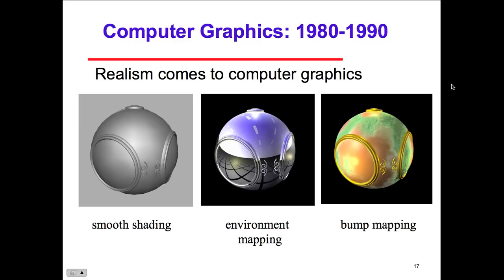Computer graphics from the 1980s to the 1990s: realism comes to the computer graphics world. Here we have smooth shading — this is the realism that comes in terms of the algorithms. And it's interesting — you can see the shading, and it's smooth because you don't see the boxes and the lines. There's an algorithm doing that for you. This class is going to give you the vocabulary for some of the menu items in those programs.